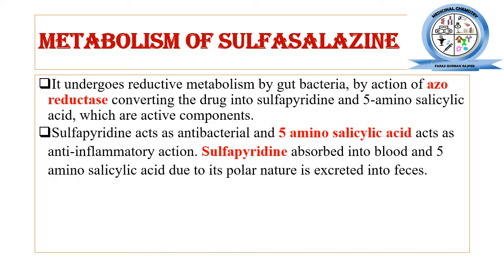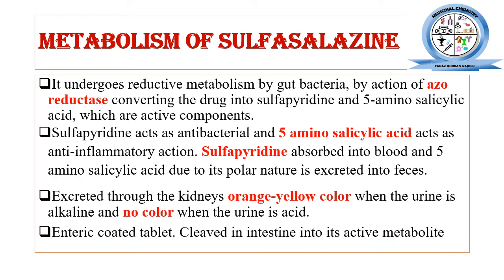These two metabolites have different pharmacological actions — sulfapyridine acts as an antibacterial and 5-aminosalicylic acid has anti-inflammatory action. Sulfapyridine is absorbed into the blood, while 5-aminosalicylic acid, due to its high polar nature, is excreted through the kidneys. The urine appears orange-yellow in color when it is alkaline, but when the urine is acidic, colorless urine is observed. Sulfasalazine is available in enteric-coated tablet form and its metabolites are broken down inside the intestine.